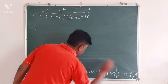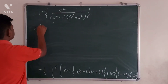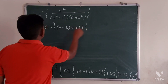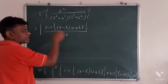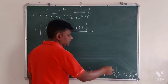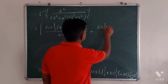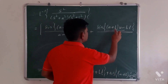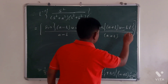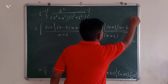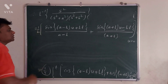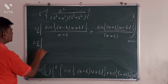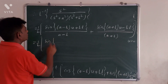Now integrating with respect to u: the integral of cos gives sin. So the result is one half times [sin((a minus b)u plus bt) over (a minus b) plus sin((a plus b)u minus bt) over (a plus b)], evaluated from u equals 0 to t. Substituting the upper limit u equals t: sin((a minus b)t plus bt) over (a minus b) plus sin((a plus b)t minus bt) over (a plus b).